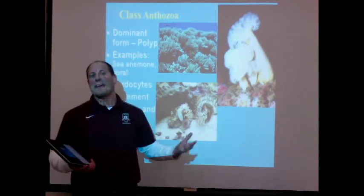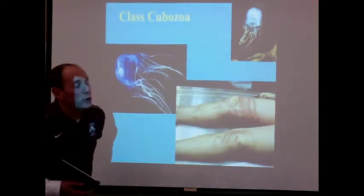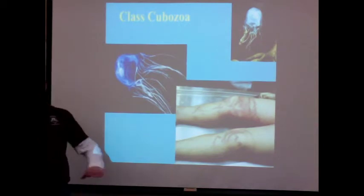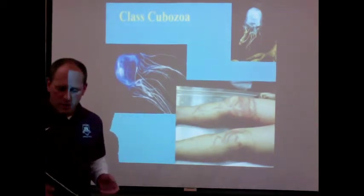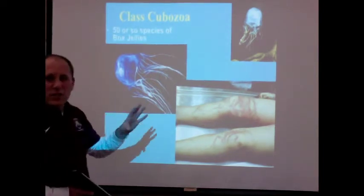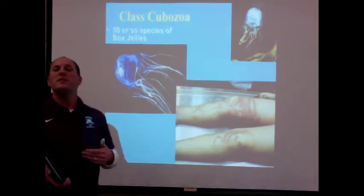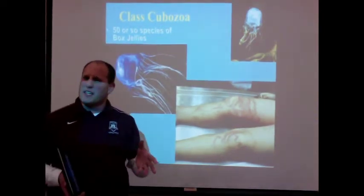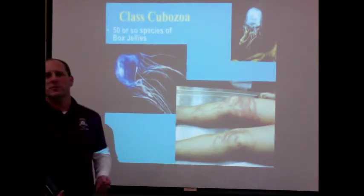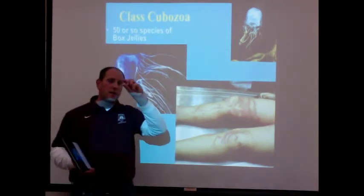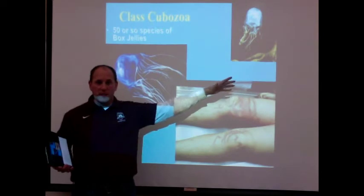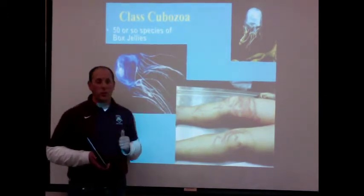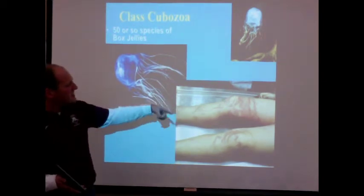Our final class of the four in phylum Cnidaria is the class Cubozoa. There are about 50 or so species of these organisms, commonly called box jellies or sometimes sea wasps. These guys have really long thin tentacles — the tentacles can reach 10 feet, while their main body is probably about an inch. Extremely long tentacles, and they are very, very poisonous organisms. Here's a person who got wrapped in the tentacles — you can see all the red welts on the legs.